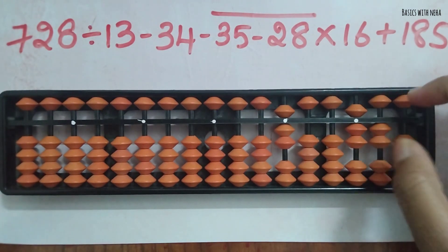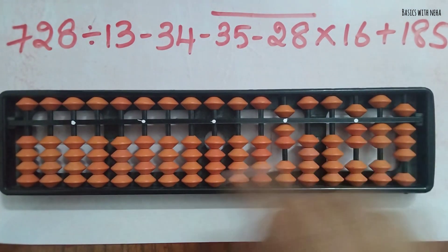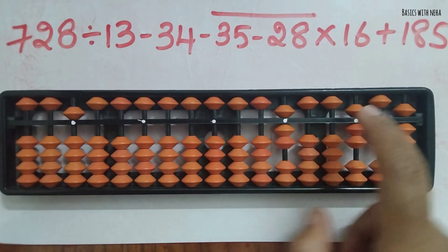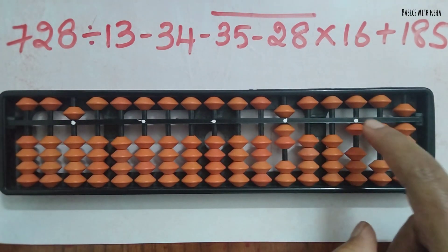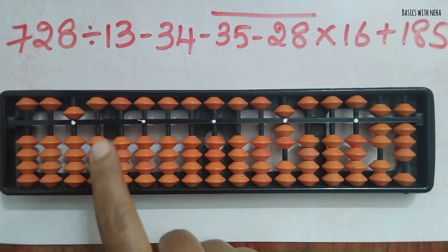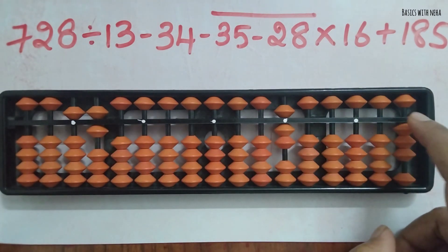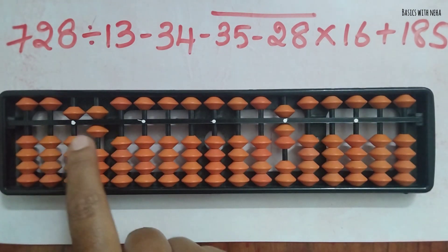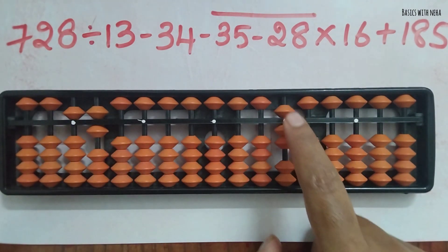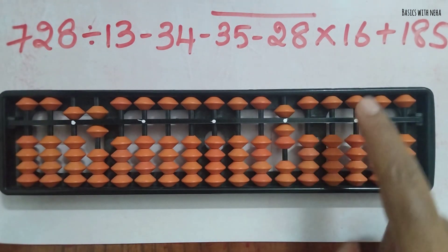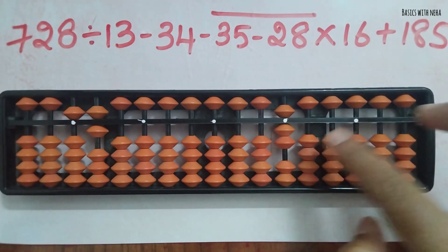Now we should do the division first, so I'm taking 728 and dividing it by 13. 13 fives are 65, again 13 fives are 65, and 13 ones are 13. So I have an answer 56 here. And here I have 7 which is negative, and I have to multiply it with 16.